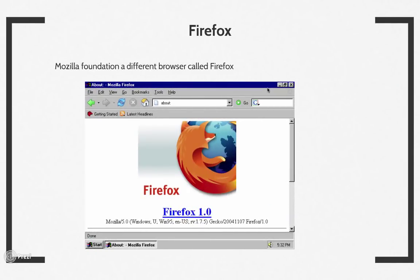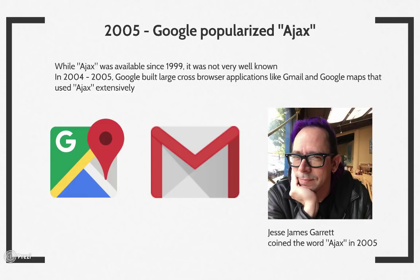Mozilla Foundation created the Firefox browser, which could also do AJAX. Although AJAX had been around since 1999 and was even in Firefox in the 2002-2003 timeframe, not many people had done anything with it until Google came up with two incredibly complex applications — Gmail and Google Maps — built primarily on AJAX. This showed everyone that you could build complex, cross-browser applications that performed like desktop applications, all in the browser, and that led to a renaissance in JavaScript.